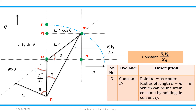The third locus is constant EI·VT/XT. Take N as the center and NM as the radius. Drawing the curve with this radius gives us the locus for constant EI·VT/XT. The radius NM equals EI·VT/XT, which can be maintained constant by holding the DC field current constant. If your generator operates within this region, it will be operated within a safe limit. This is the limit called constant EI.